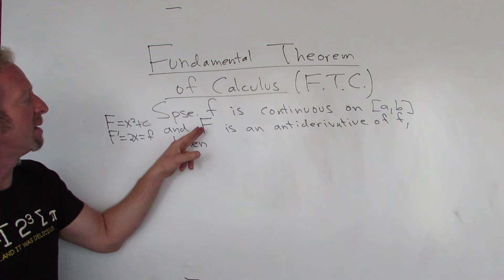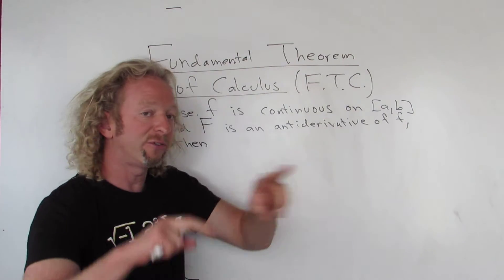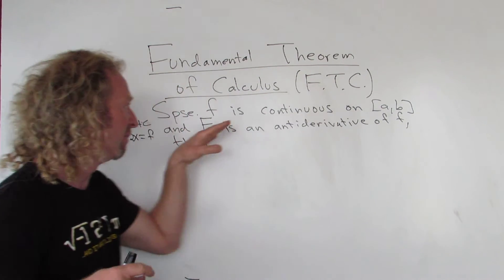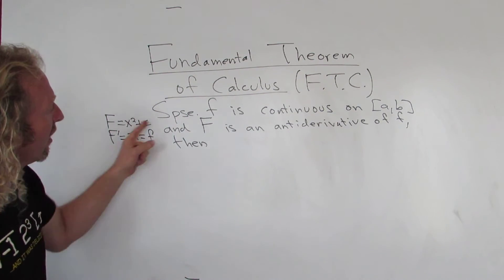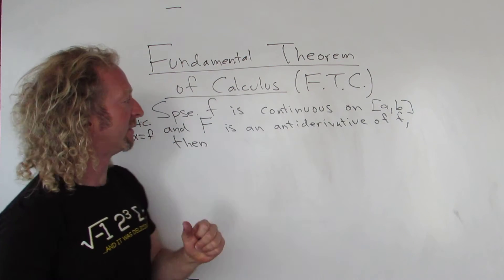So basically, if you differentiate big F, you get little f. Or if you integrate little f, you get big F. Same thing. Alright, so suppose F is continuous and big F is an antiderivative of little f.